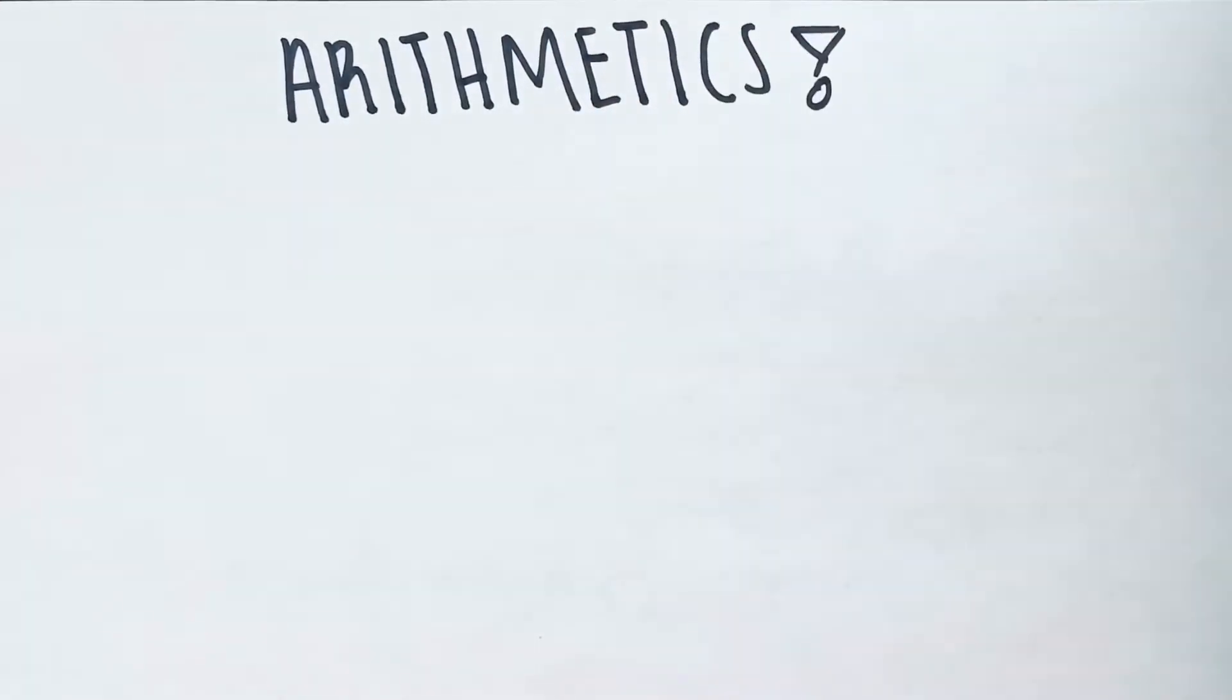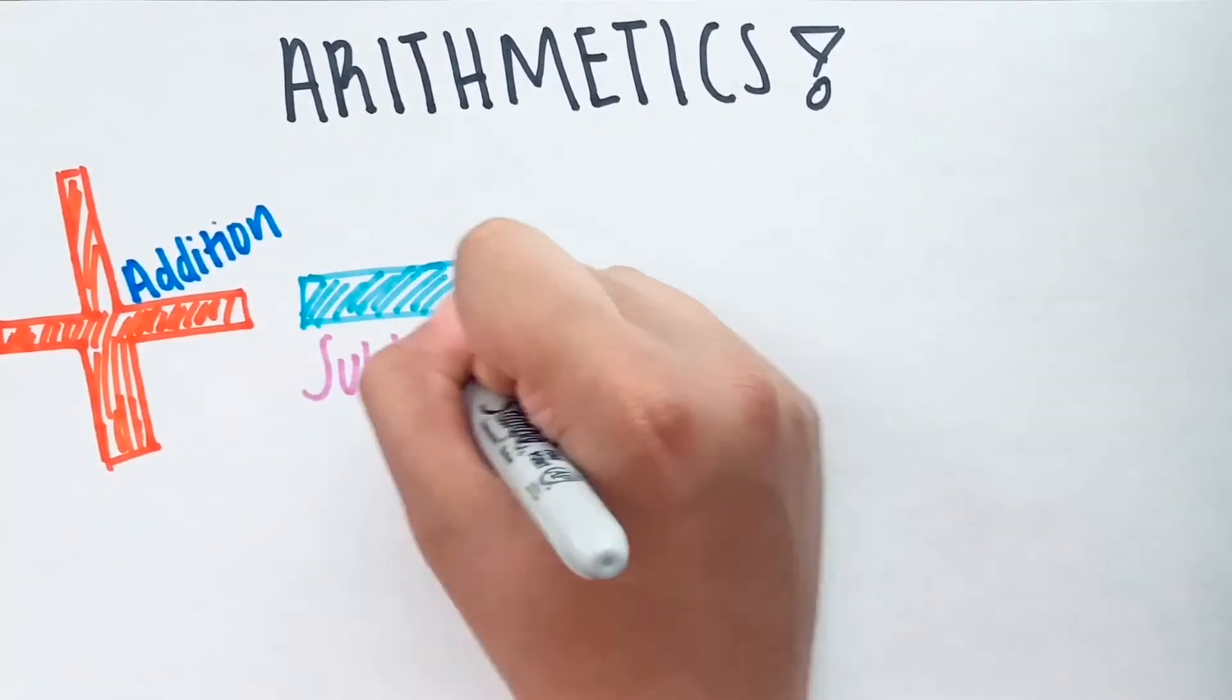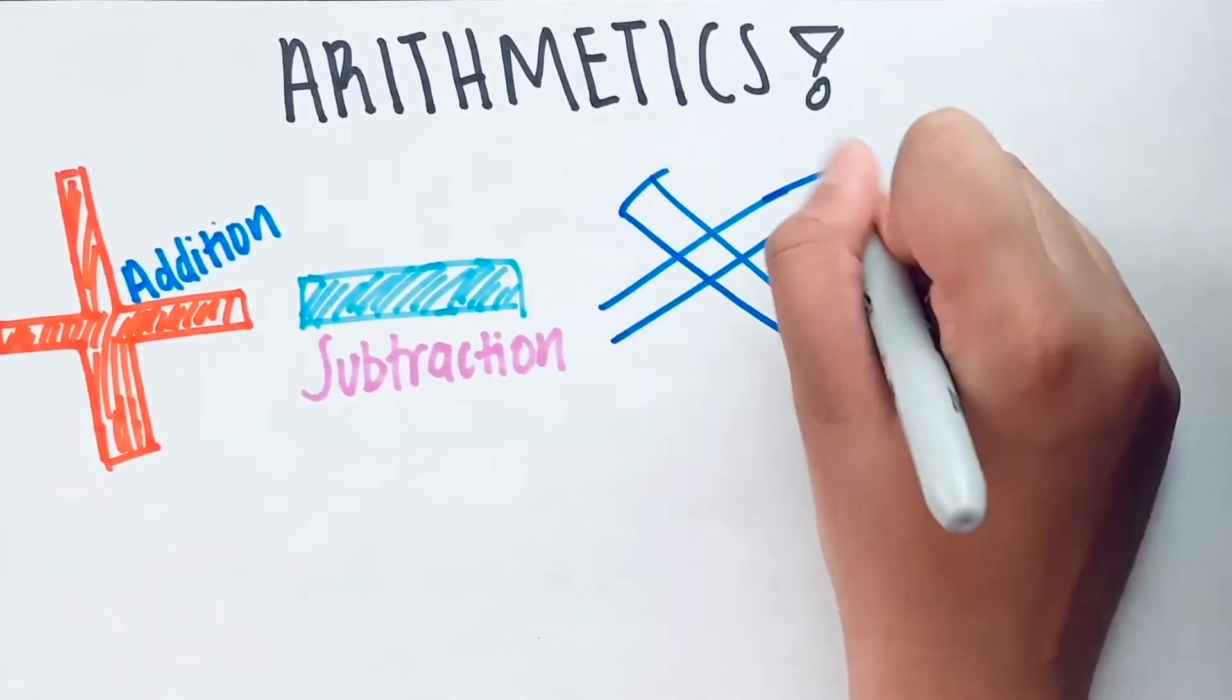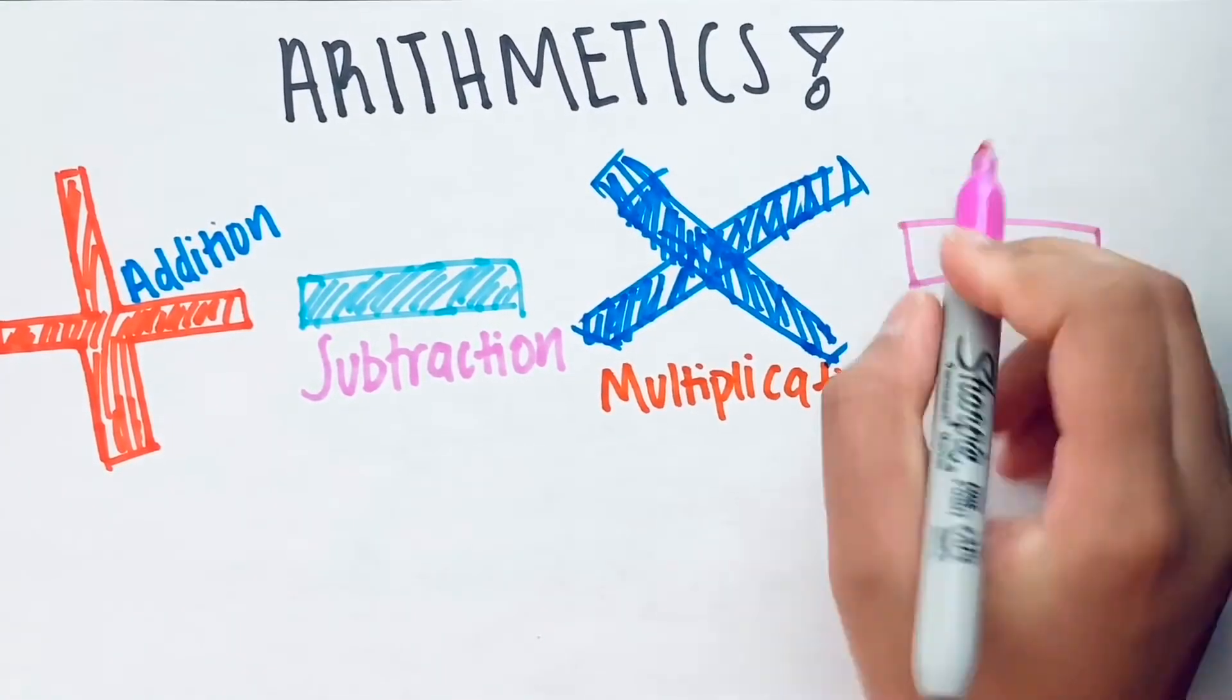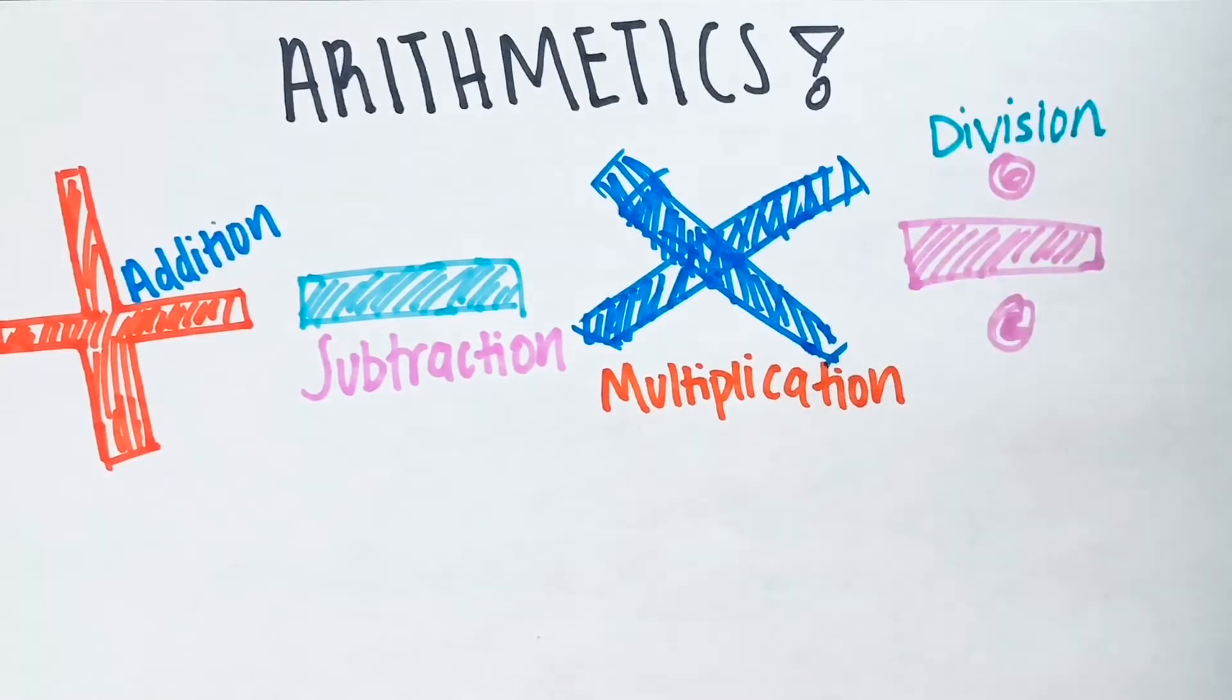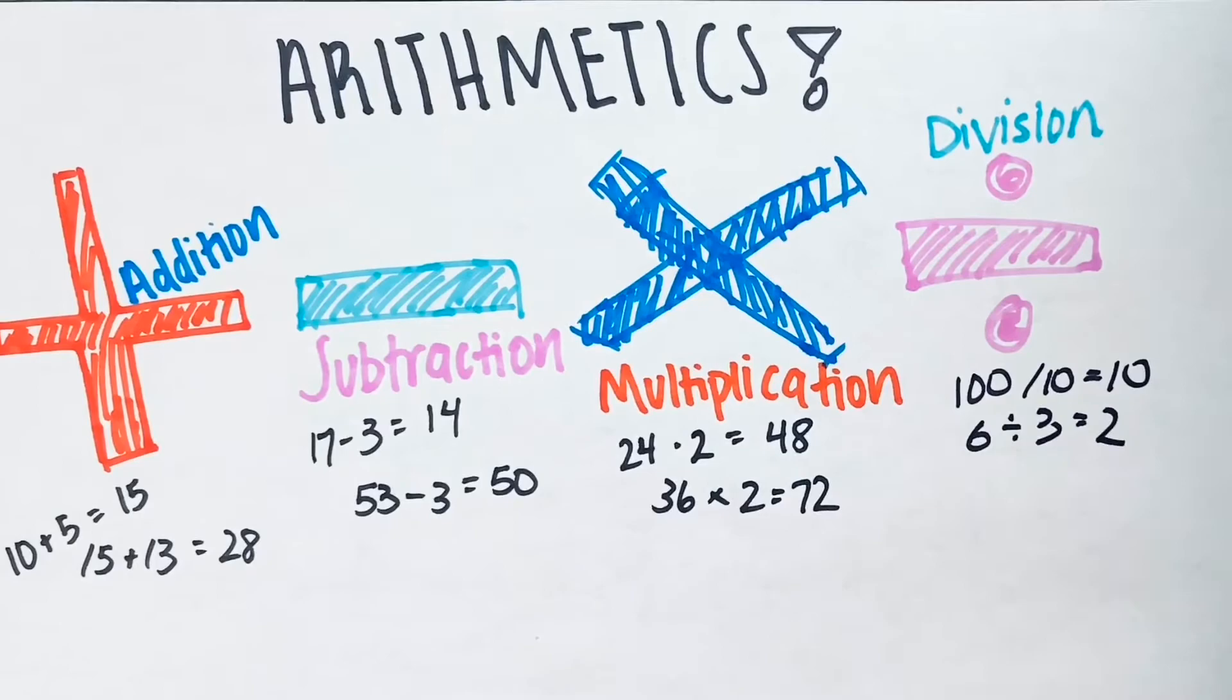Arithmetic is a branch of mathematics that consists of the study of numbers, especially the properties of the traditional operations on them: addition, subtraction, multiplication, and division. These operations are denoted by the given symbols. Arithmetic is a foundation upon which all other advanced mathematics are built. Additionally, arithmetic is the aspect of math that people are most familiar with.